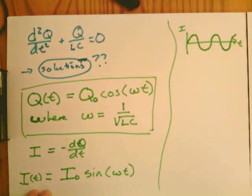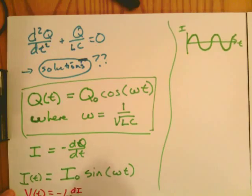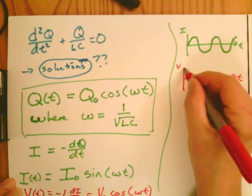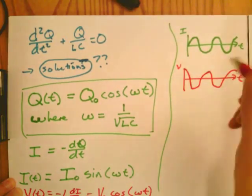And of course, we can calculate the voltage as well by taking another form across the inductor. For the voltage, you'll get a cosine. For the current, you get a sine.